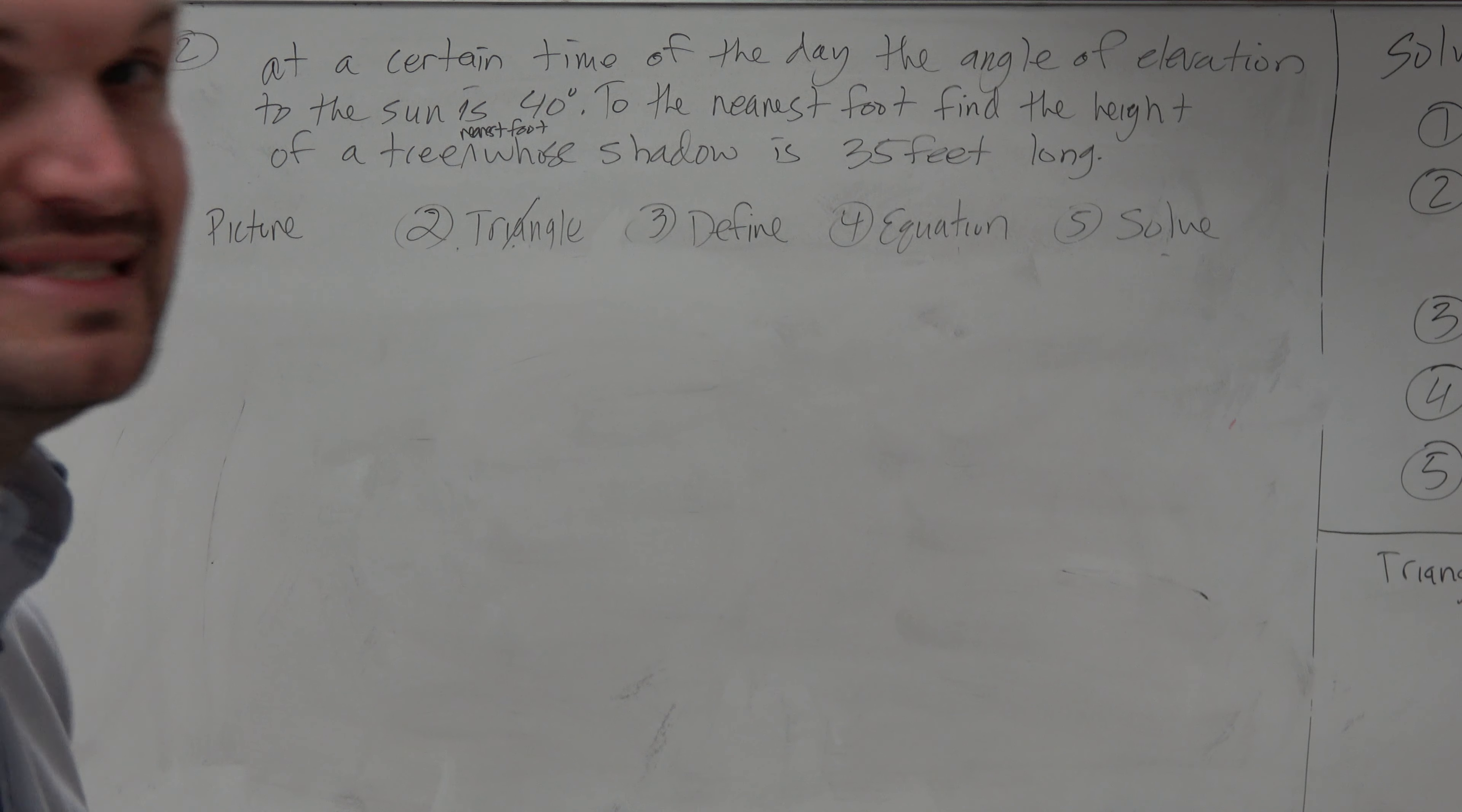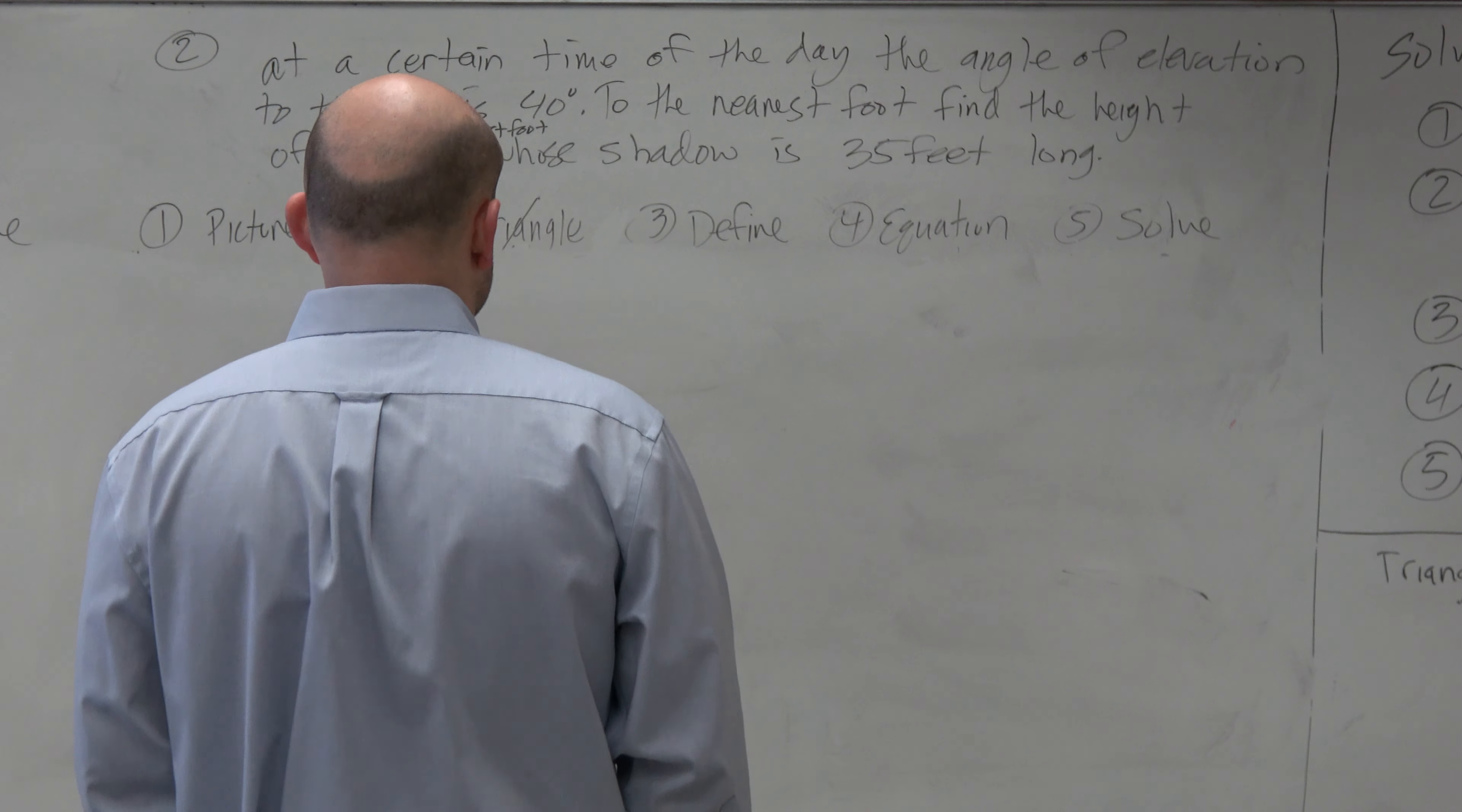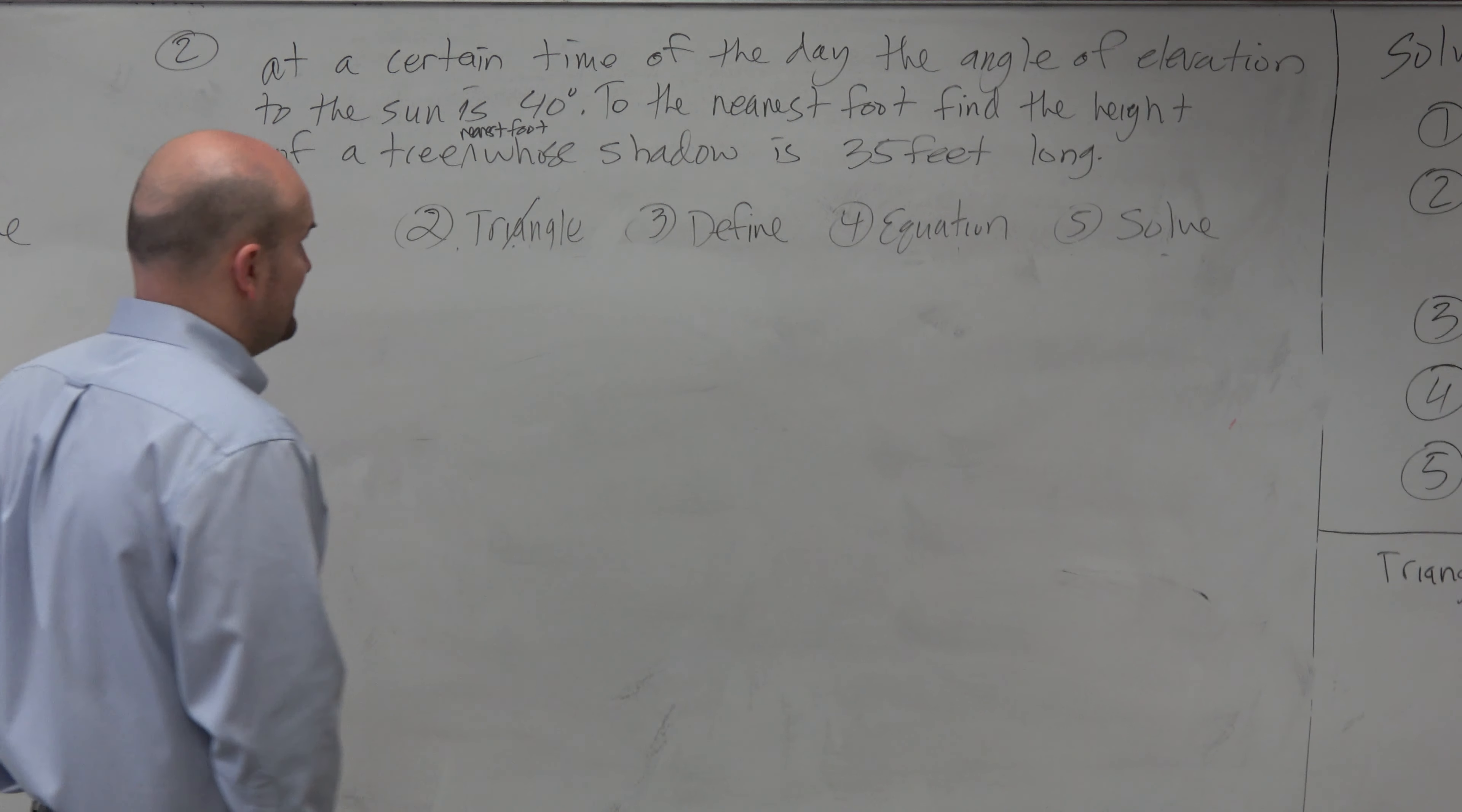So this problem reads, at a certain time of day, the angle of elevation to the sun is 40 degrees. To the nearest foot, find the height of a tree whose shadow is 35 feet long.